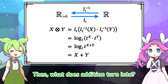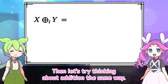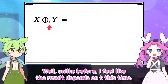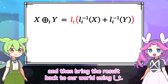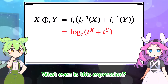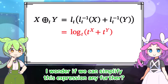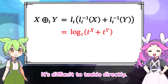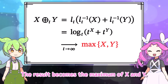Multiplication turned into addition. Then what does addition turn into? That's a good question. Let's try thinking about addition the same way. Unlike the multiplication case, I feel like the result depends on t this time. We bring x and y to L_t inverse, add them together, then bring the result back to our world using L_t. So we just need to calculate this. Wait — what even is this expression? It's not addition or multiplication. This result turned into something really confusing. It's difficult to tackle directly. But if we let t approach infinity, the result becomes the maximum of x and y.